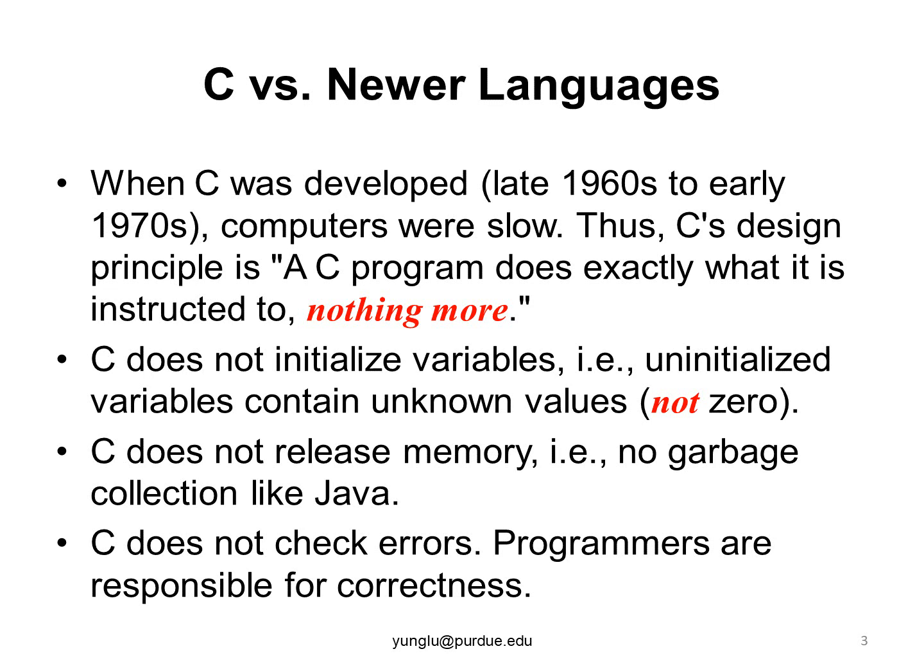C programs do not collect garbage. What is garbage in a computer program? When a computer program runs, it often needs to store data. If the data is no longer needed, it becomes garbage. Some programming languages, such as Java, automatically reclaim the space used for the data. This is called garbage collection. C does not do this for several reasons. The most important reason is that determining which pieces of data are no longer needed is a difficult problem.